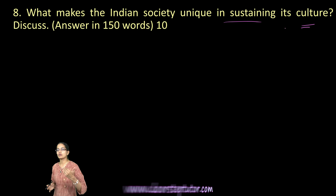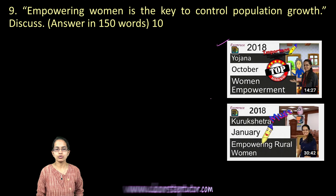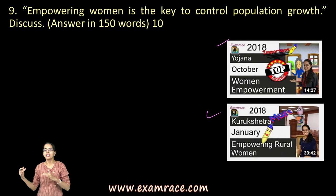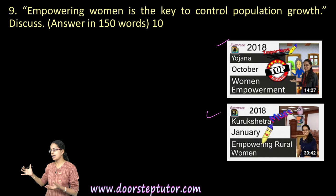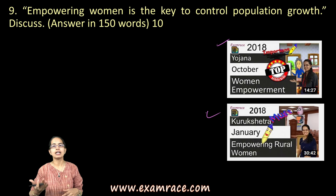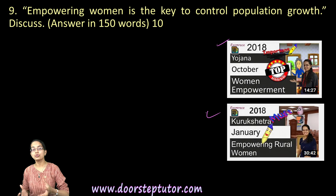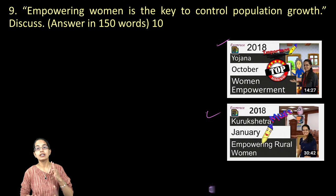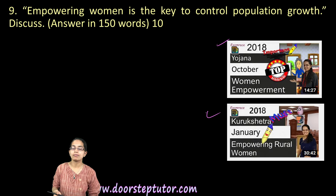The next question asks about empowering women as a key to controlling population growth. There are editions of Kurukshetra and Yojana that focus on women's empowerment. Historically, women were considered a financially weaker section and family planning was the least priority. As financial conditions improved, women began entering the workforce, large-scale illiteracy decreased, and higher education and access to social media raised awareness about population issues.